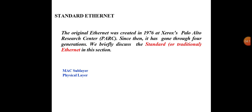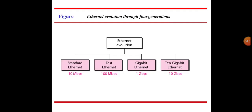Standard Ethernet: The original Ethernet was created in 1976 at Xerox Palo Alto Research Center. Since then it has gone through four generations. Ethernet evolution: Standard Ethernet at 10 Mbps, Fast Ethernet at 100 Mbps, Gigabit Ethernet at 1 Gbps, and 10 Gigabit Ethernet at 10 Gbps. We will briefly discuss the standard or traditional Ethernet, covering the MAC layer and the physical layer.